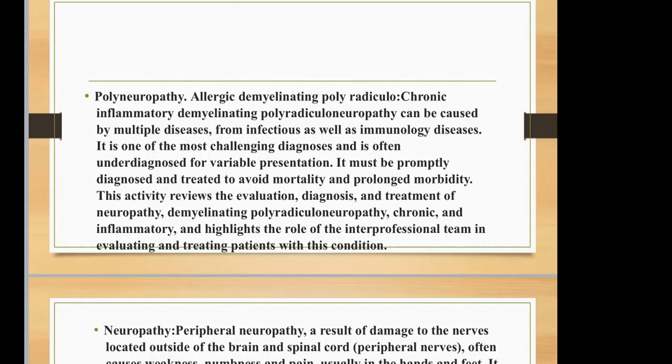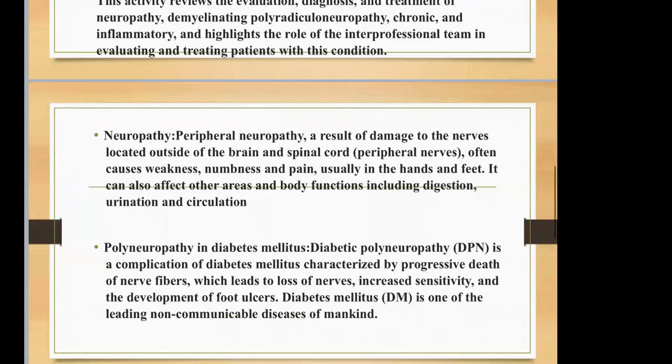This activity reviews the evaluation, diagnosis, and treatment of chronic inflammatory demyelinating polyradiculoneuropathy. Peripheral neuropathy results from damage to the nerves located outside of the brain and spinal cord. It often causes weakness, numbness, and pain, usually in the hands and feet, and can also affect other areas including digestion, urination, and circulation.